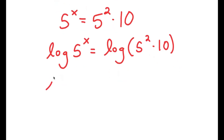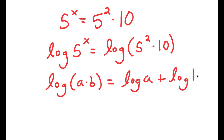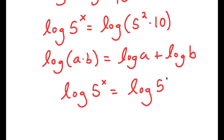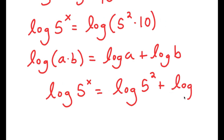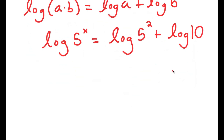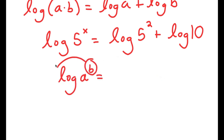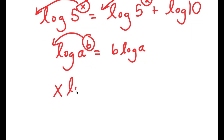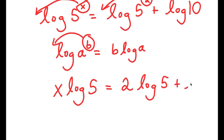And this is the same thing as log of 5 squared times 10 equals log of 5 squared plus log of 10. Now, if I have something in the form log a to the power of b, I can move this exponent b to the front, so this equals b times log a. So I have log 5 to the power of x — I can move x to the front — and log 5 to the power of 2, so I can move 2 to the front. And I get x times log of 5 is equal to 2 times log of 5 plus log 10.